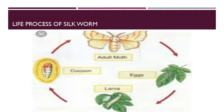Let's discuss the stages of silk production. First, the silk moth Bombyx mori lays eggs on the mulberry tree. The eggs hatch into caterpillar silk worms. They are fed chopped mulberry leaves for twenty to twenty-five days.